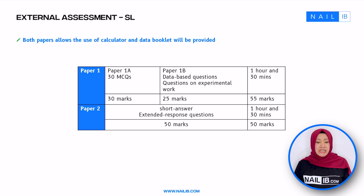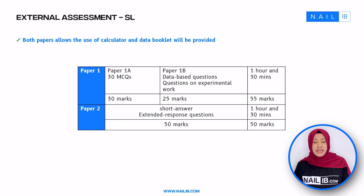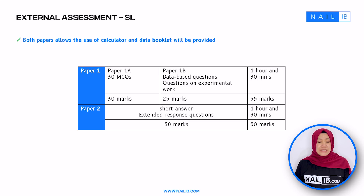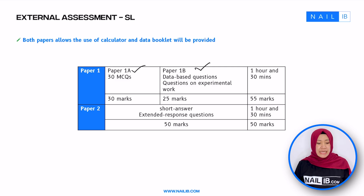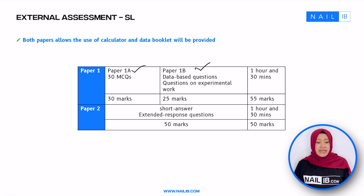More detail about external assessment. The difference between standard level and higher level is only about the time required to complete both paper one and two, and the content — since higher level covers more content compared to standard level. But the system and type of questions are the same. Both standard level and higher level students will have paper one and paper two. For paper one, it has two sections: paper 1A and paper 1B. Paper 1A has 30 MCQs, covering any content from your two-year IB diploma program — 30 marks, so one question is one mark.